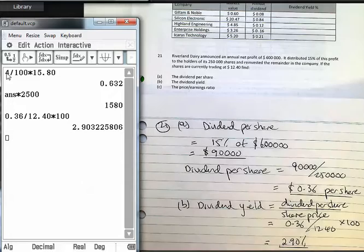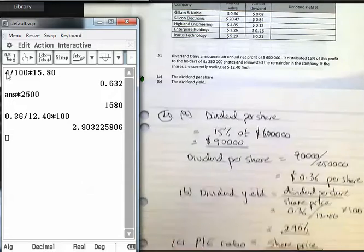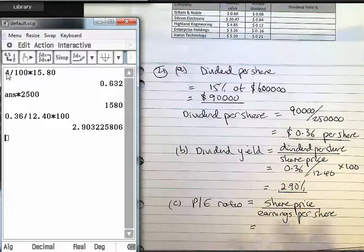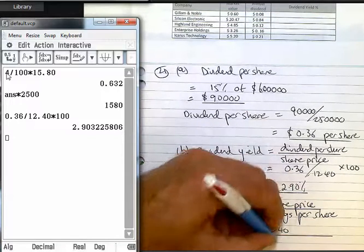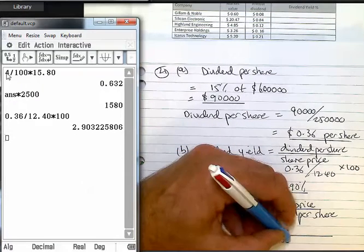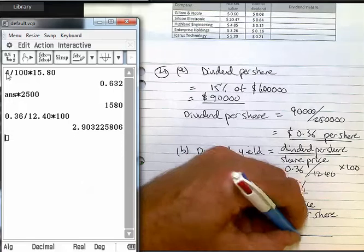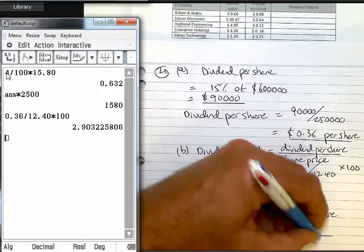Now, the share price in this instance was $12.40, and that's divided by the $600,000, the total figure, divided by $250,000.